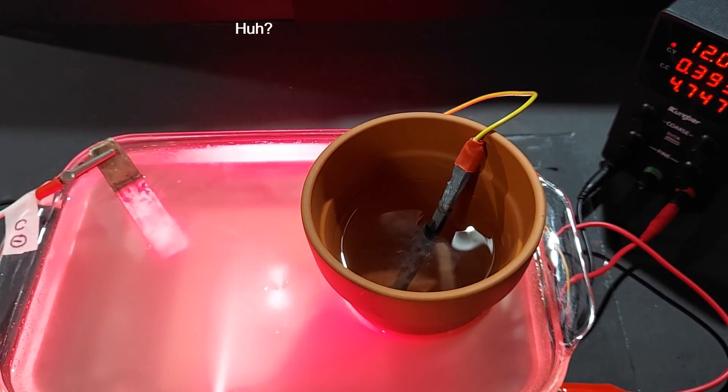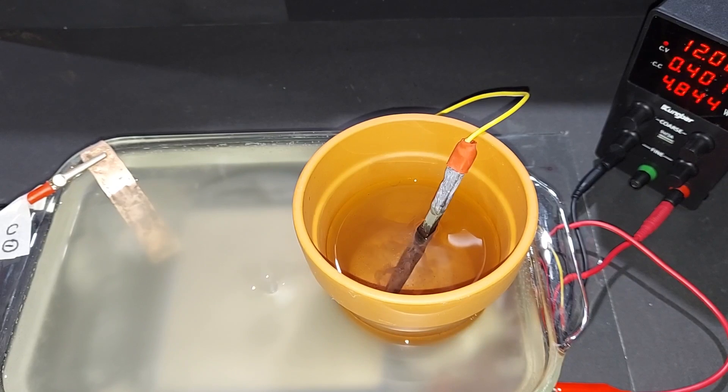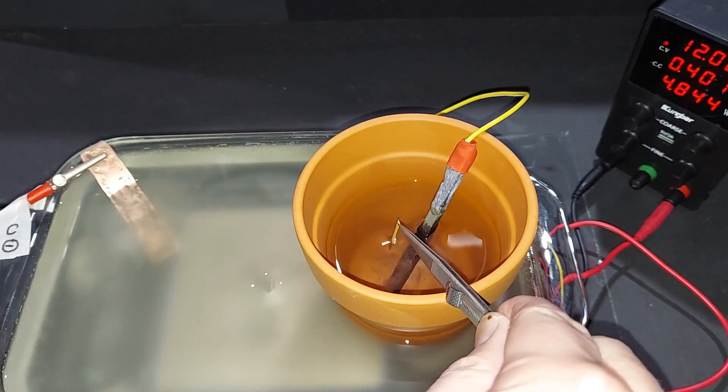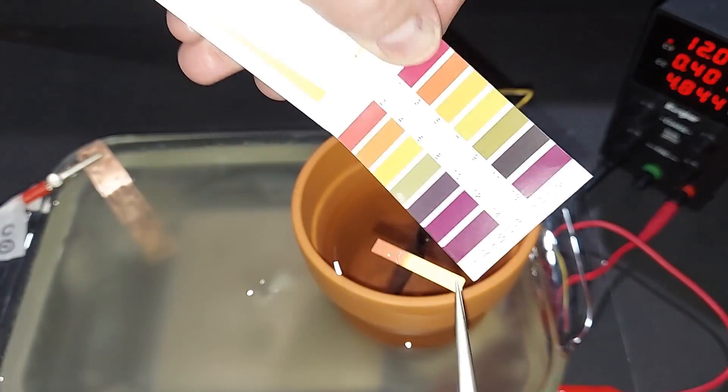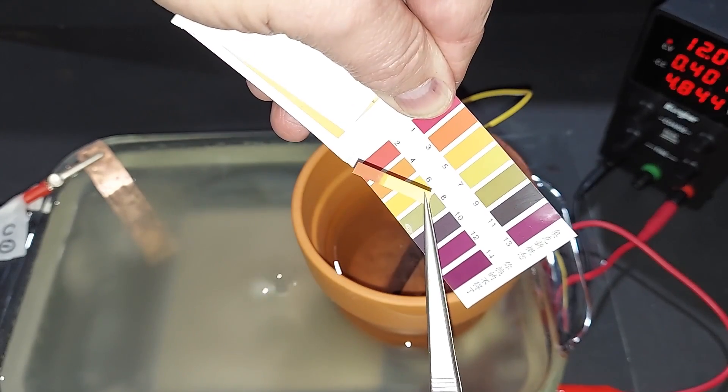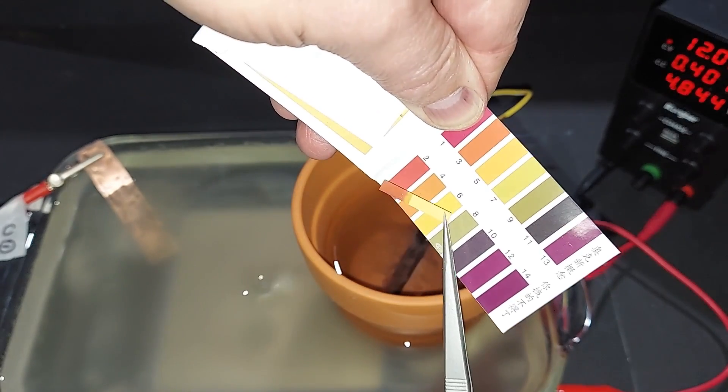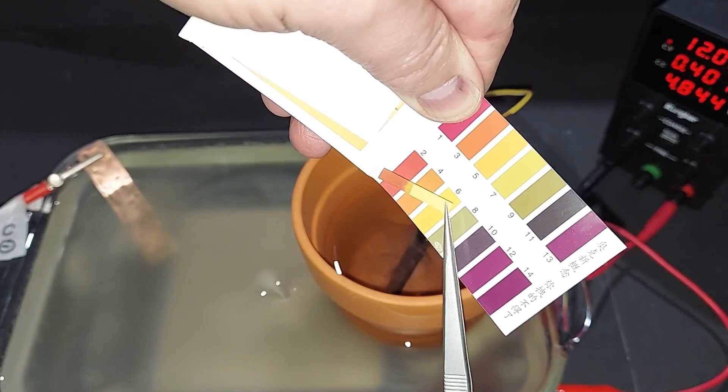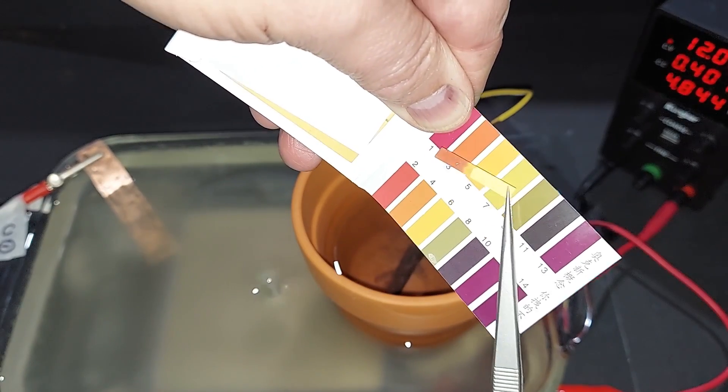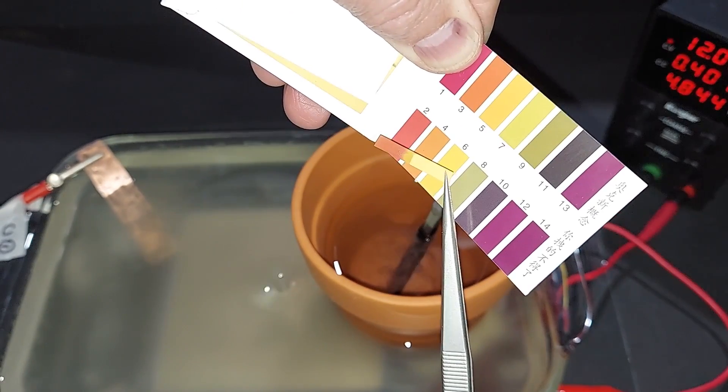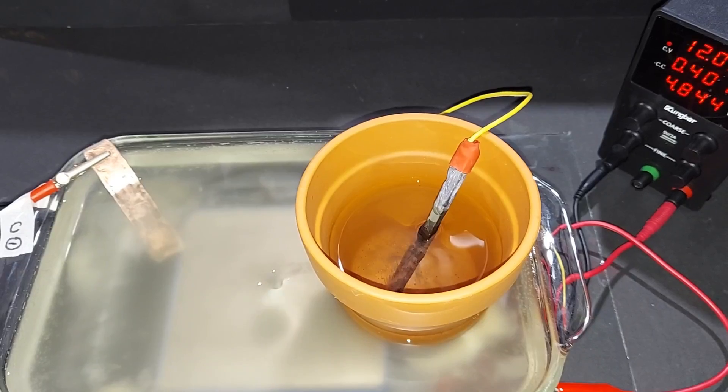Four hours out, we're at 0.4 amps. Still getting a lot of bubbling. Checking the pH—that's really close to a 2, darker than a 3. We continue to lower the pH, which is a great sign.